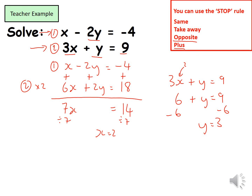I now substitute both values back into equation one to verify. Equation one is x minus 2y equals minus 4. With x equals 2 and y equals 3: 2 minus 2 times 3 is 2 minus 6, which equals minus 4. That does equal minus 4, so both values are correct. Please copy this example out before moving on to the main task.